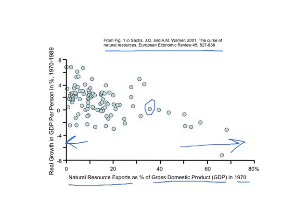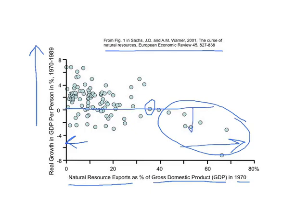What's shown here is how much did that economy grow over the next 20 years. What you'll notice is that all of the countries that really relied on exporting natural resources in 1970 had very slow or actually negative growth over the next 20 years. Some countries that did not have many natural resources also had slow growth, but all of the countries with fast growth did not rely on natural resources.